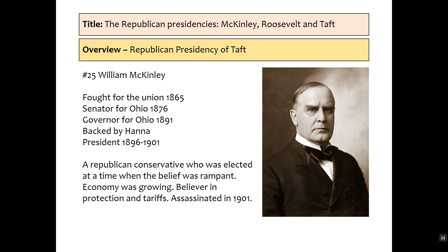Our first president is William McKinley, number 25. He fought for the union in 1865, becomes president in 1896, defeats William Jennings Bryan rather successfully, and again in 1900 — so he's elected twice. He's a Republican conservative, and in 1896 that is the predominant belief at the time. The economy is growing and he's very successful. He's a believer in protection and tariffs and drags the party to the right-hand side of the spectrum at that time.